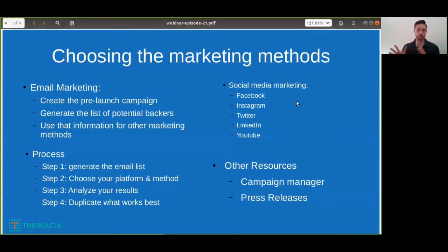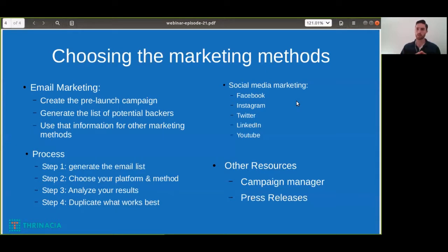To summarize the process: step one is generate the email list. Step two is choose the platform and method — there might be multiple platforms and methods. If you're using multiple, you want to analyze the results. You can use Google Analytics, which is a simple HTML or PHP code you copy and paste onto your website. Then you can analyze which methods are performing best and duplicate what works.